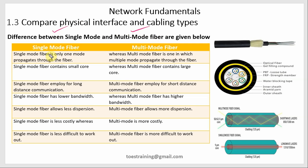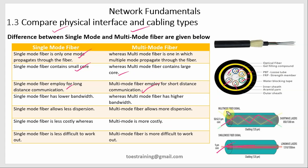Comparing single-mode and multi-mode fiber: single-mode fiber propagates only one mode of light — a single beam for data transfer — while multi-mode fiber propagates multiple beams. Single-mode fiber has a small core, while multi-mode fiber has a larger core. Single-mode fiber is used for long-distance communication; multi-mode fiber is used for short distances. Single-mode fiber has lower bandwidth, while multi-mode fiber has higher bandwidth.